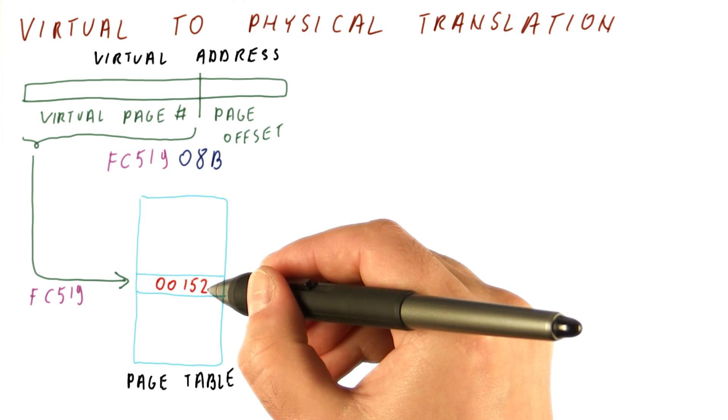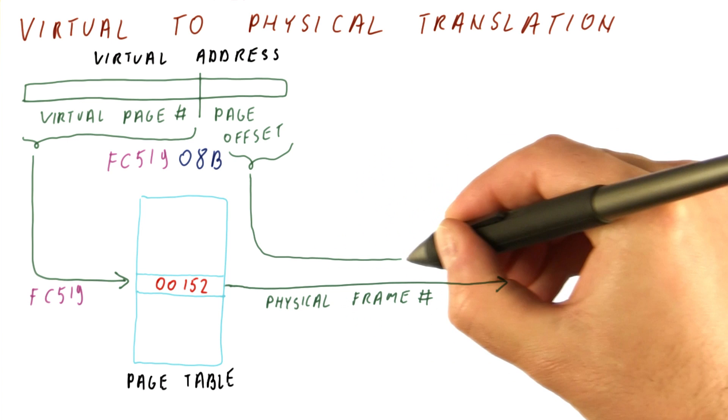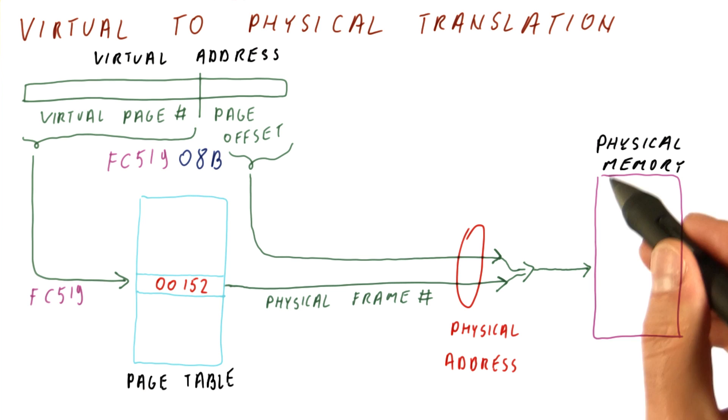Let's say that the frame number in this entry is 00152. We take this physical frame number and put it together with the page offset into a physical address. And that is what we use to actually access the physical memory.